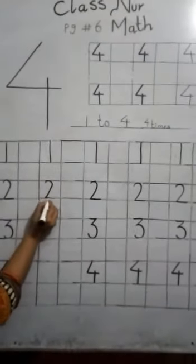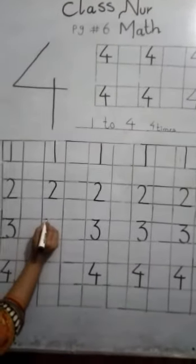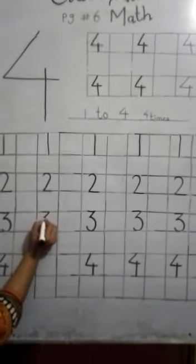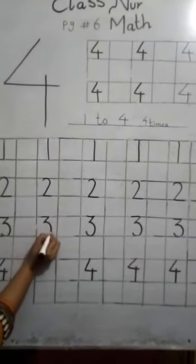Write two four times. Now write three. Small nine, sliding line, small many three. It is called three. Write three four times.